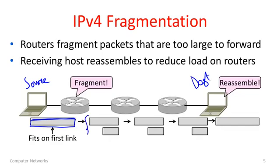We've divided the packet into two different fragments: a long one — probably the longest size that fit over that link — and then a leftover chunk. Those fragments then proceed through the network, routed independently. The other routers treat them all as individual packets. These pieces will arrive at the destination, which does the hard work of reassembling them — completing the jigsaw puzzle to produce the original packet — which is then handed up to the transport layer, which won't know whether or not there was fragmentation.